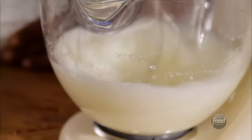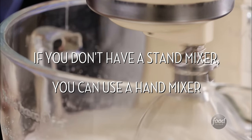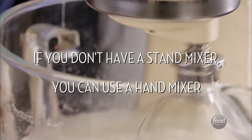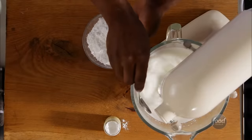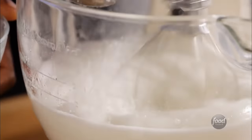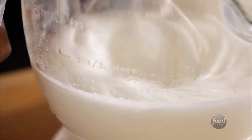Whip them until they're foamy and starting to get thicker. Then slowly add confectioner's sugar. It melts easily and won't weigh down your meringue.